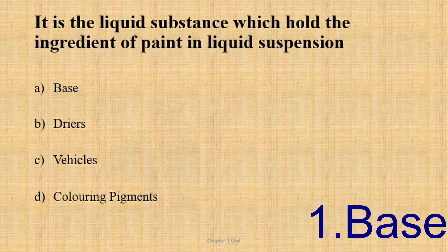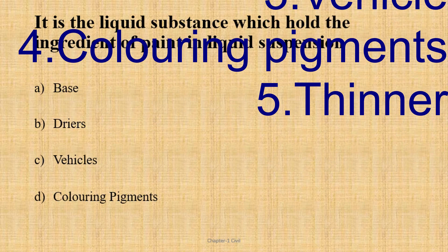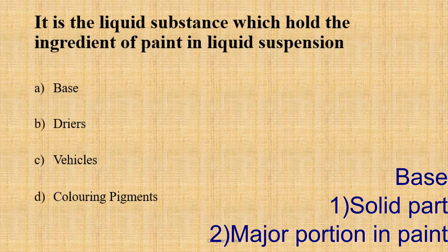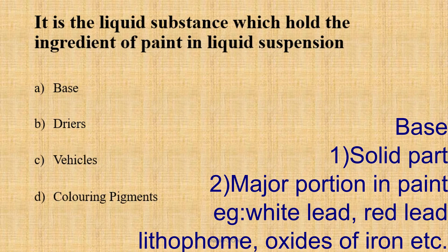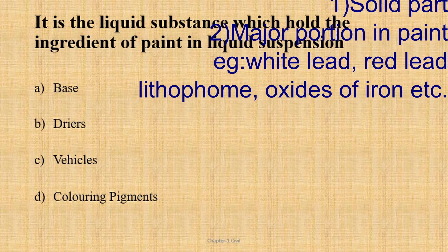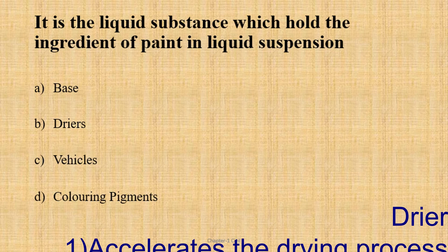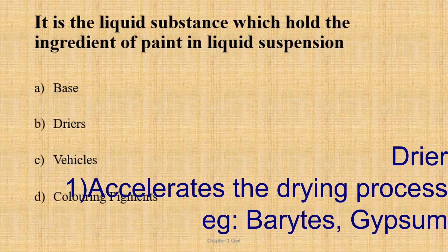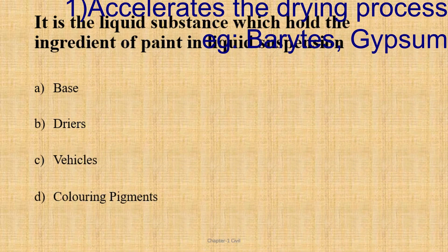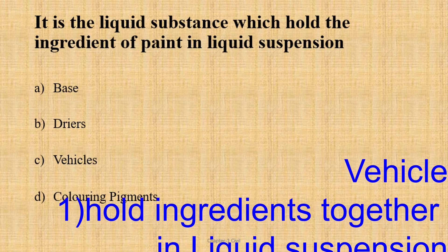The five components of paint are: Base, Dryer, Vehicles, Coloring Pigments, and Thinners. Base is a solid substance. The drying process is accelerated by the dryer. Vehicles are a liquid substance.